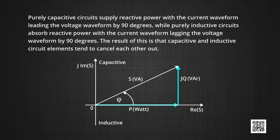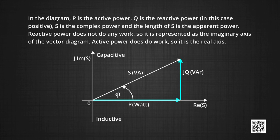Purely capacitive circuits supply reactive power with the current waveform leading the voltage waveform by 90 degrees, whereas purely inductive circuits absorb reactive power with the current waveform lagging the voltage waveform by 90 degrees. Capacitive and inductive circuit elements tend to cancel each other. In the phase diagram, P is active power, Q is reactive power (positive in this case), and S is the complex power whose length is the apparent power. Since reactive power does no work, it is represented as the imaginary axis of the vector diagram, while active power is the real axis.